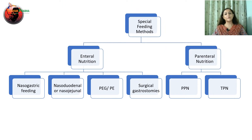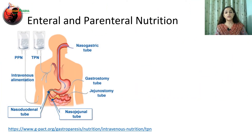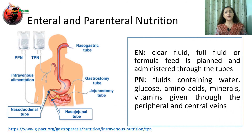All nutrition support care plans strive to use the gastrointestinal tract whenever possible, either with the help of enteral nutrition or by total or partial return to oral intake. For patients who are unable to take food orally, special feeding methods are used to meet nutrient requirements. Enteral nutrition is provided by delivering nutrition support through the gastrointestinal tract — orally or by accessing the gut through tube feeding. Here, clear liquid, full liquid, or formula feed is planned and administered through the tubes. The composition of the feed depends upon the point of insertion and the condition of the gastrointestinal tract.